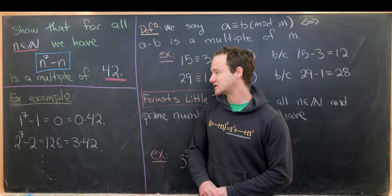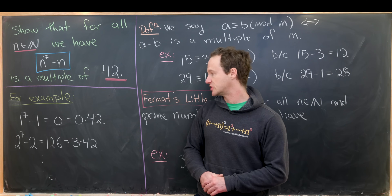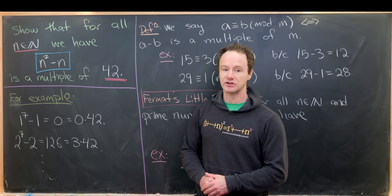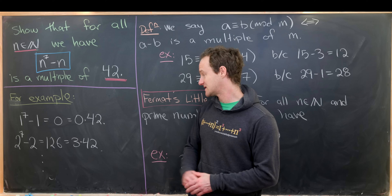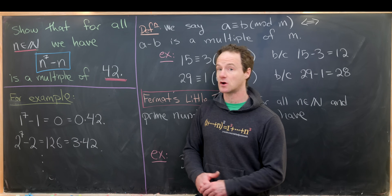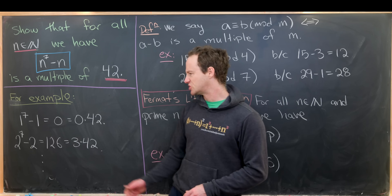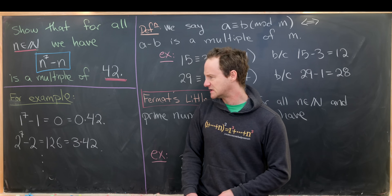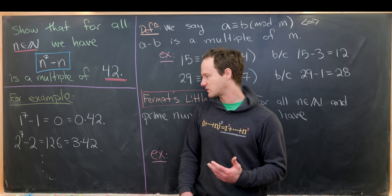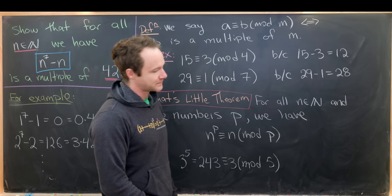Next, we have 2 to the 7 minus 2. 2 to the 7 is 128. Subtract 2, you get 126. That is 3 times 42, so that's also a multiple of 42. Maybe check the cases when you have 3 to the 7 minus 3 and a couple more and post them in the comments if you'd like.